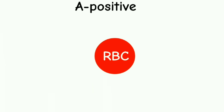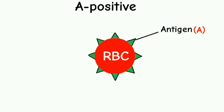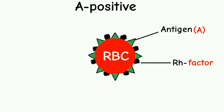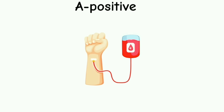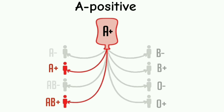A positive. This blood group is characterized by the presence of antigen A on the surface of red blood cells and a protein named the RH factor. About 36% of people have A positive blood group, making it the second most common blood type in America. Individuals with A positive blood group can receive blood from A positive, A negative, O positive, and O negative donors, and can donate blood to A positive and AB positive recipients.